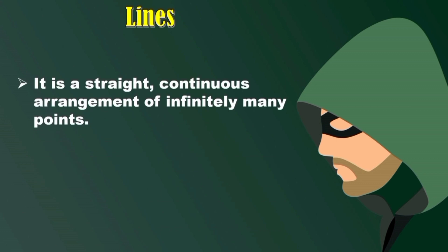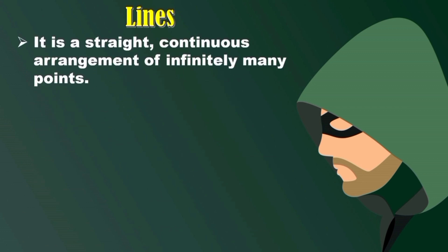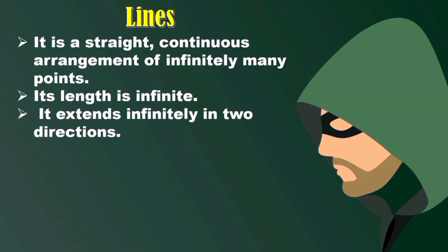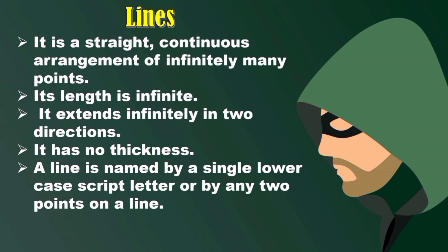Lines. It is a straight, continuous arrangement of infinitely many points. Its length is infinite. It extends infinitely in two directions. It has no thickness. A line is named by a single lowercase script letter or by any two points on a line. A line symbol is placed above the letters.